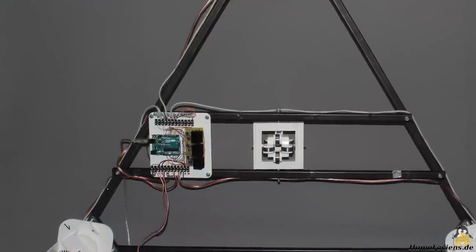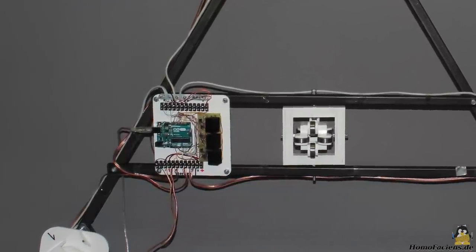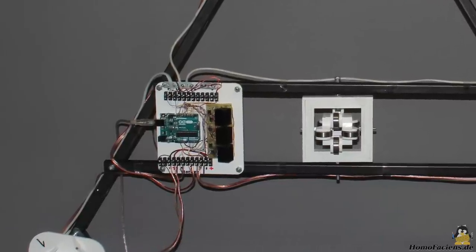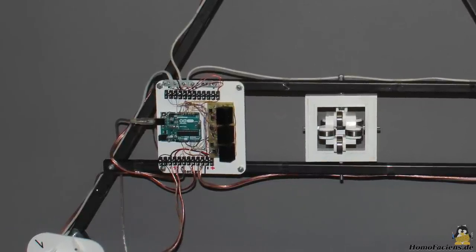An Arduino Uno that is also mounted on the frame controls the 3 winches by 3 H-bridges and a total of 6 transmissive optical sensors.